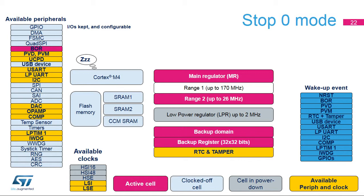Stop 1 is similar to stop 0, with the main regulator switched off. The voltage regulator is configured in main regulator mode. All clocks in the V-Core domain are stopped. The PLL and the HSC oscillators are disabled. The RTC, clocked by the internal or external low-speed oscillator, can remain active. The brown-out reset is always enabled. Most of the peripheral clocks are gated off.